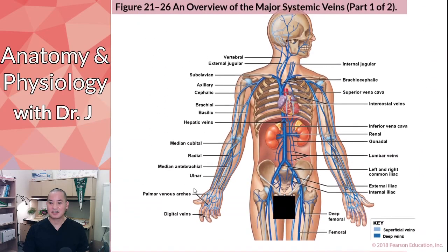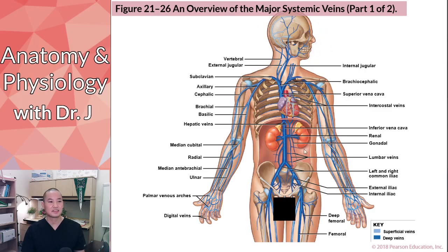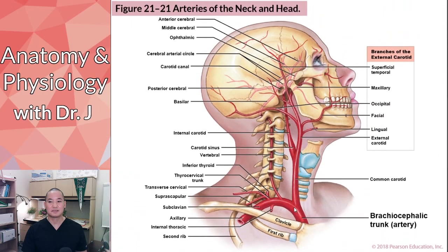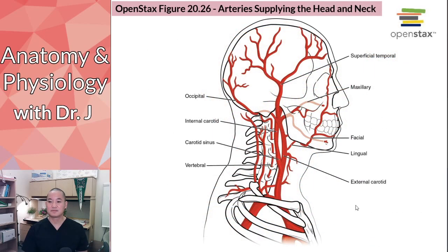Notice in that previous full-body picture — what major part of the body is not labeled? The head and brain. There are many vessels that supply and drain the head, neck, and brain, so we look at those separately. Your brain needs a lot of oxygen, nutrients, and glucose, so it requires a large and adequate blood supply.